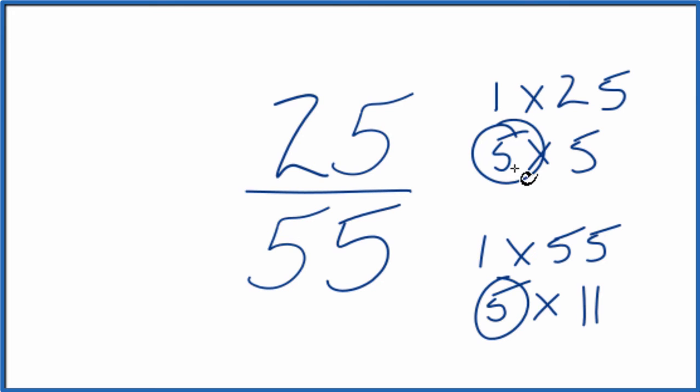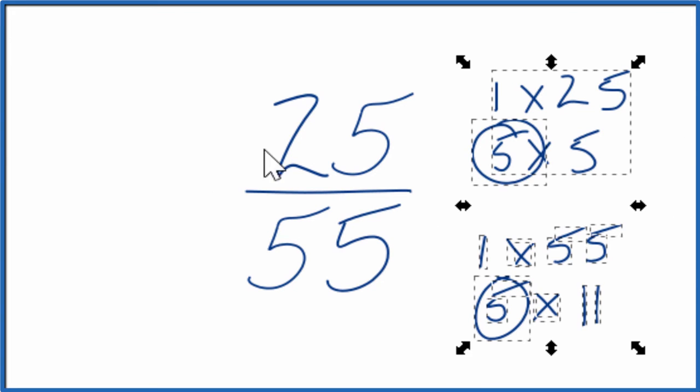So I'll divide 25 by 5 and then 55 by 5 and we'll have simplified 25 over 55. Let's move these over here.